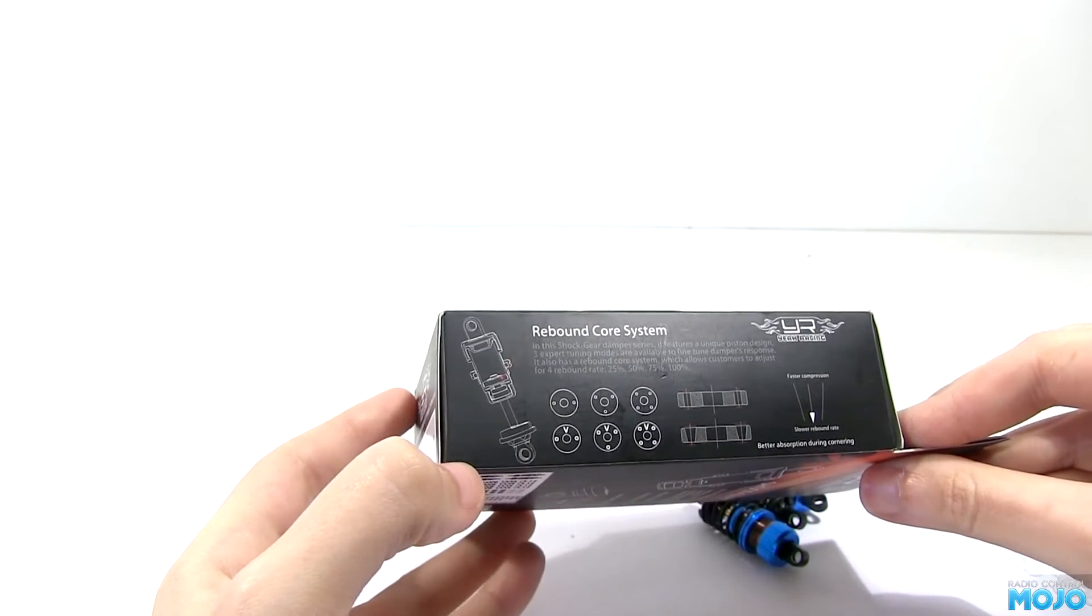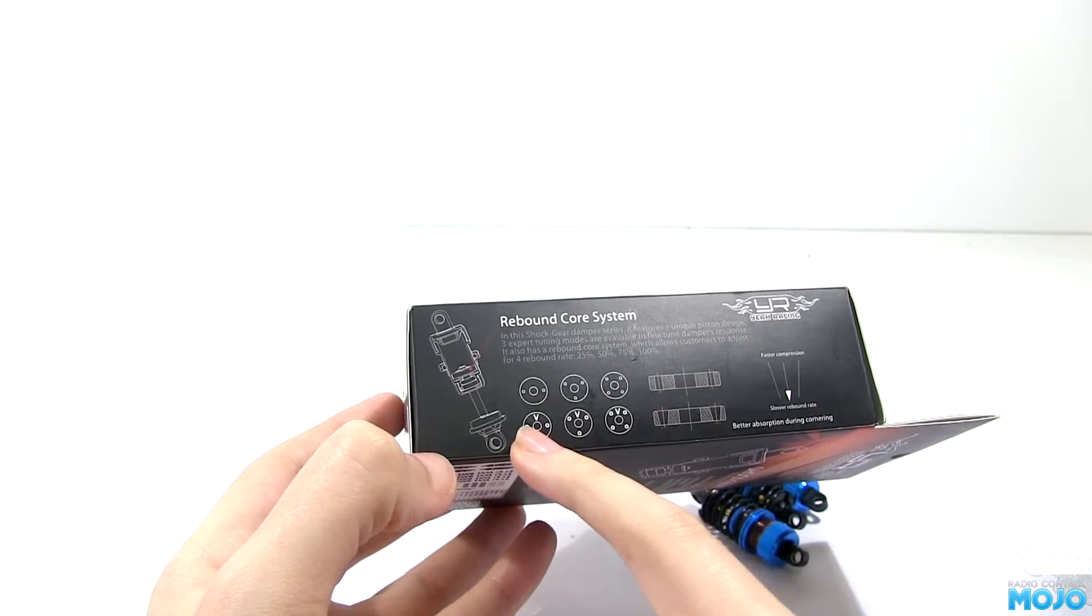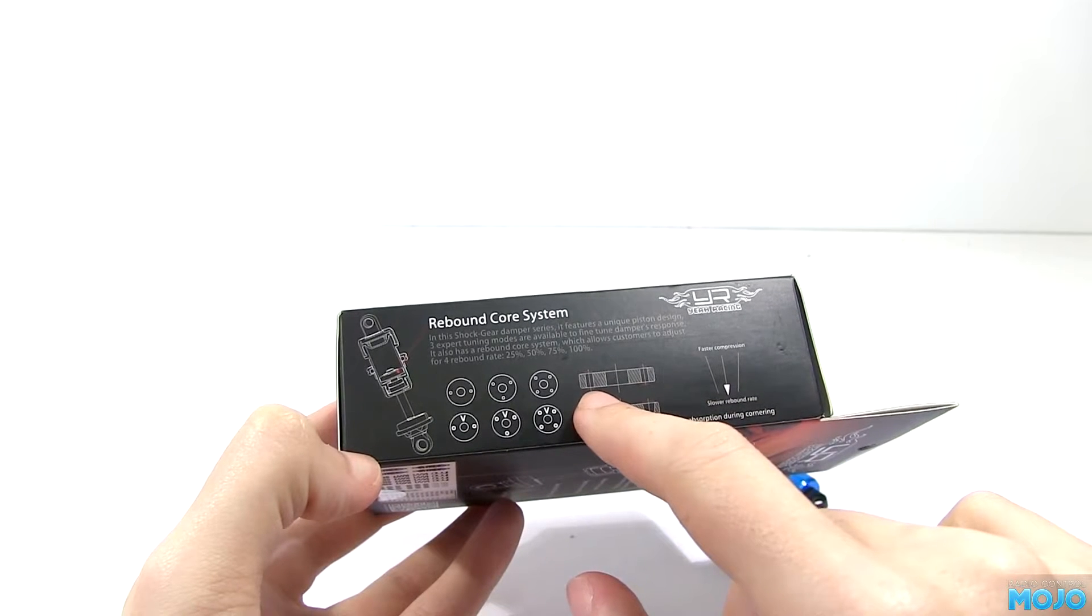Anyway, on the side of the box are some diagrams of the damper pistons. Now, you get the usual 2, 3 and 4 hole pistons, but you also get a set with tapered holes.